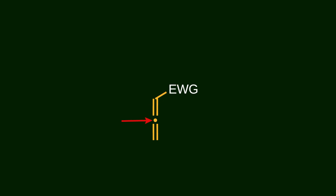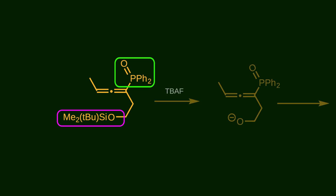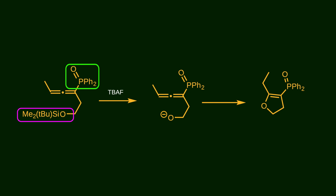Electron-withdrawing groups pull electron density toward themselves, making the central carbon atom of the allene more electrophilic than the terminal carbon atoms. This makes it an ideal target for nucleophilic attack, a strategy often used to construct heterocyclic rings. One notable example involves phosphine oxide, which acts as an electron-withdrawing group when attached to an allene. To form a cyclic product, the nucleophile is typically already present in the starting material in a protected form — for instance, a silyl ether. Treatment with tetra-butyl ammonium fluoride removes the protecting group, releasing the nucleophilic oxygen, which then attacks the central carbon of the allene to form a substituted dihydrofuran ring.